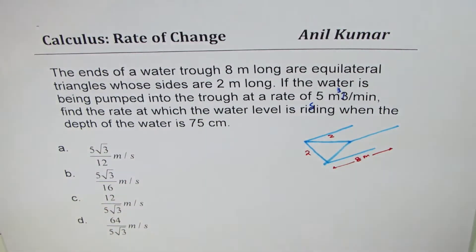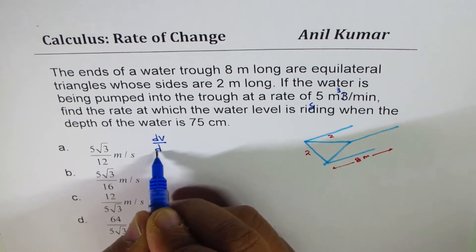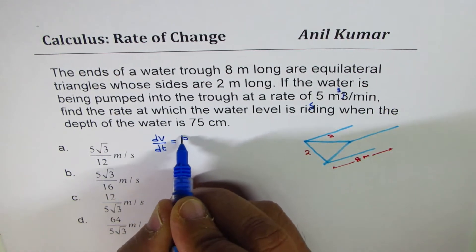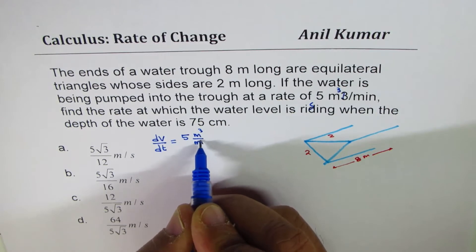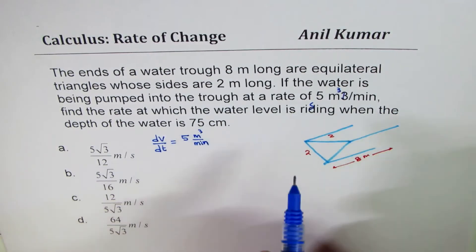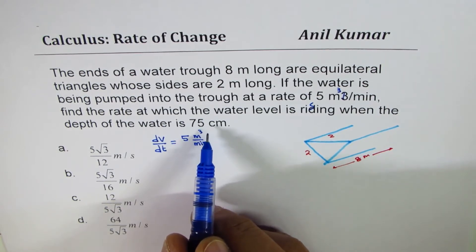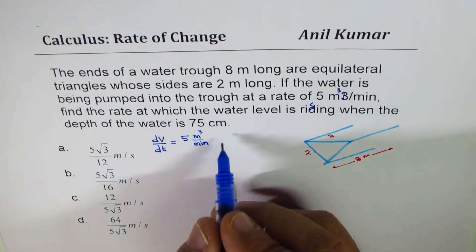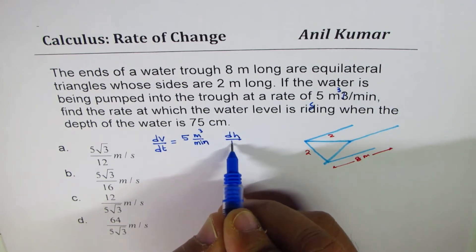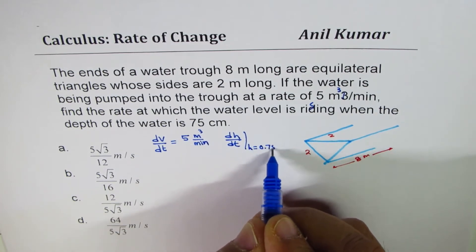The water is being pumped into the trough at the rate of 5 cubic meters. So the change in volume, that is dV/dt with respect to time, is 5 cubic meters per minute. Since we are working in meters, 75 centimeters becomes 0.75 meters. We have to find dh/dt when the height h equals 0.75.